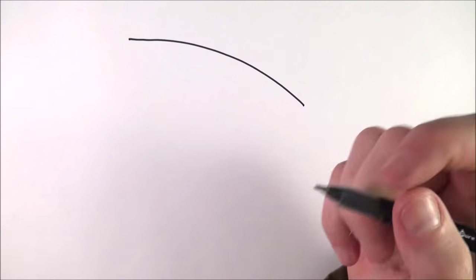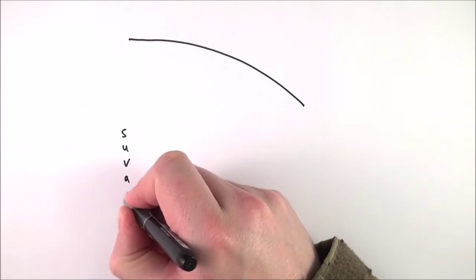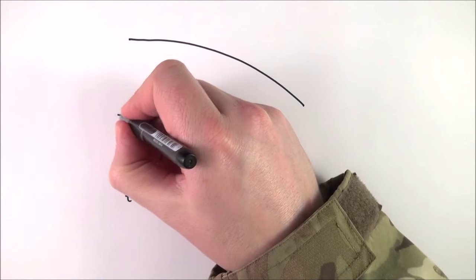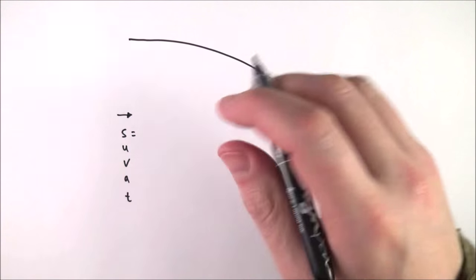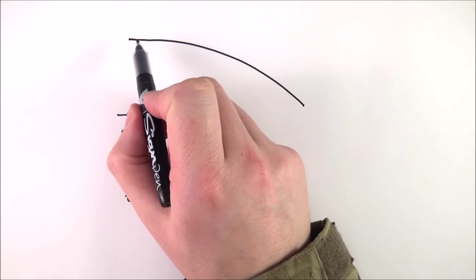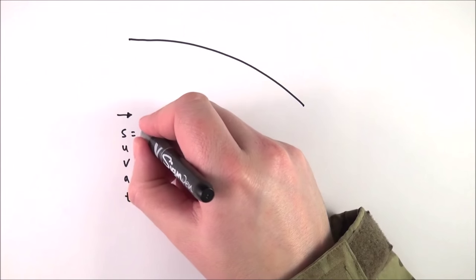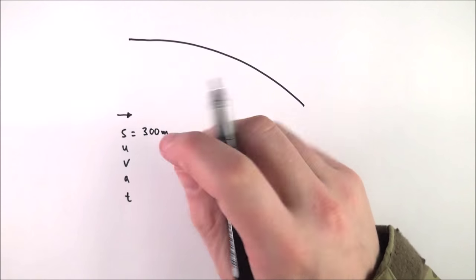So what do I know? Well first of all I can think about SUVAT in the horizontal direction. If we maybe fire a rifle 300 meters, that means the horizontal displacement from the rifle to the target is a distance of 300 meters, and I'm writing this down with the units so I know I've got it in SI units.